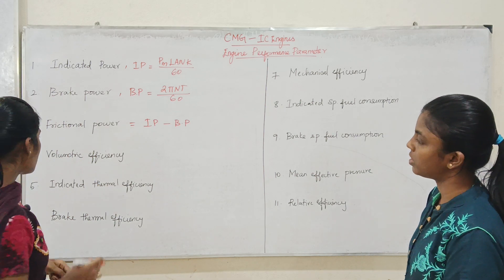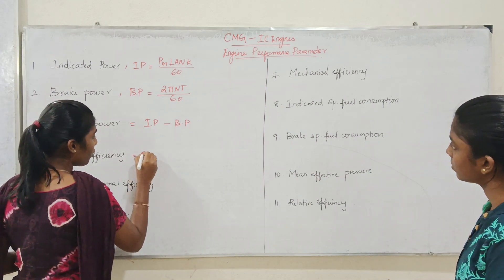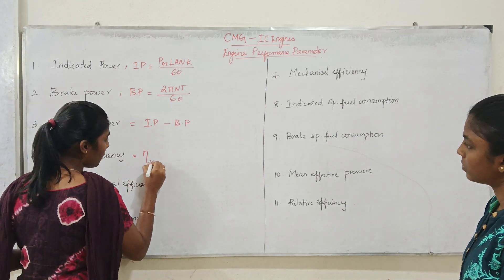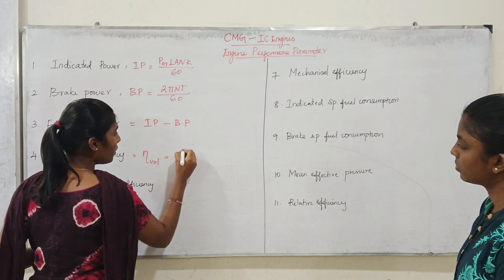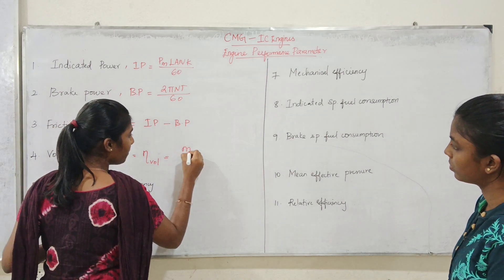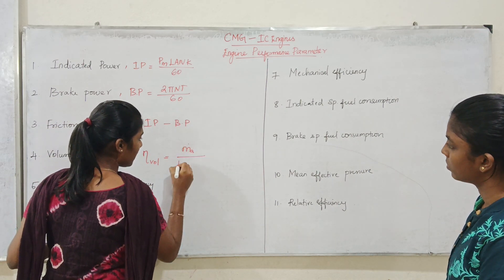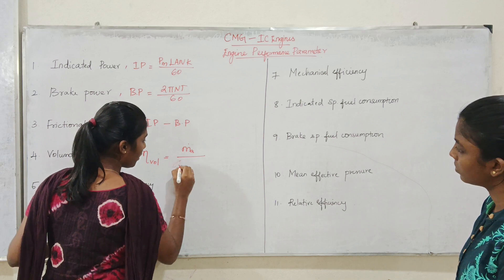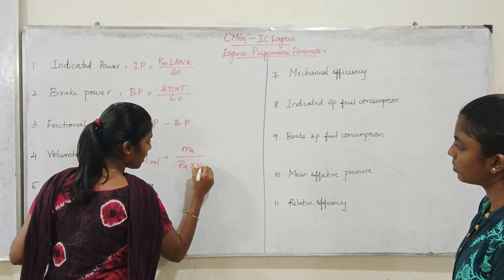Next, Volumetric Efficiency. Volumetric efficiency, denoted by Eta, is equal to MA_dot divided by rho_a into V_d, where MA_dot is the actual mass flow rate of air, rho_a is the air density, and V_d is the displaced volume.